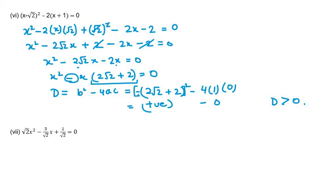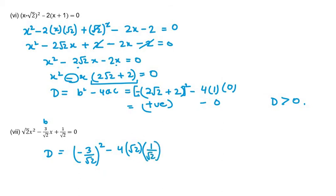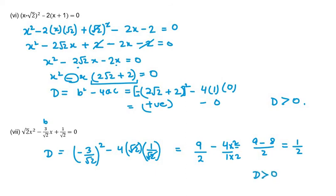The seventh part: D equals b squared minus 4ac. Here b is minus 3 root 2, and c is 1 over root 2. Root 2 and root 2 cancel, giving 9 over 2 minus 4. Taking LCM, we get 9 minus 8 over 2, which equals 1 over 2. Since D is greater than 0, the equation has two real and distinct roots.